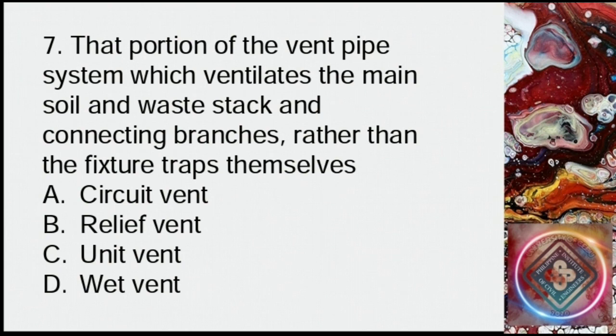Question 7: That portion of the vent pipe system which ventilates the main soil and waste stack and connecting branches rather than the fixture traps themselves. A: Circuit vent, B: Relief vent, C: Unit vent, D: Wet vent.